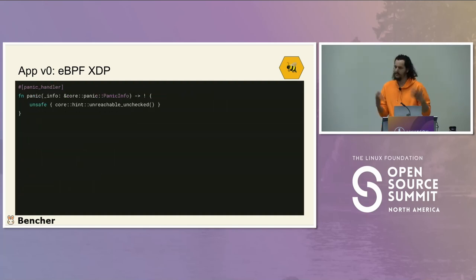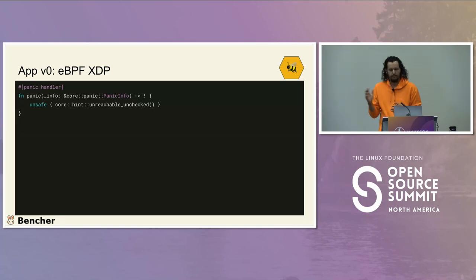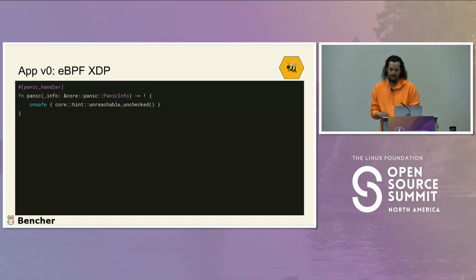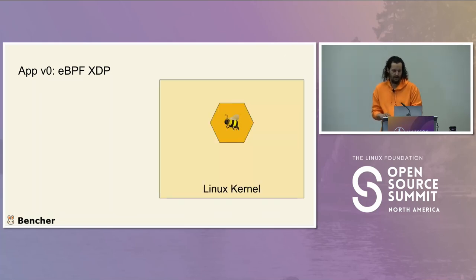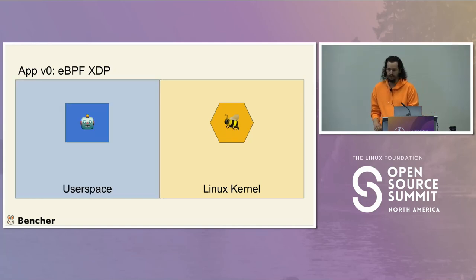There's also a panic handler because Rust can panic, and that verifier is finicky. We make sure to handle any possibility of panic in order to make the verifier happy. That's the eBPF side of our super simple app.